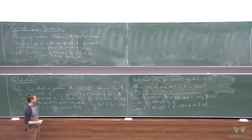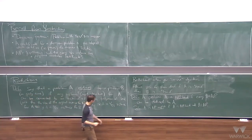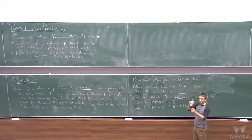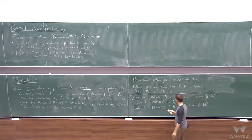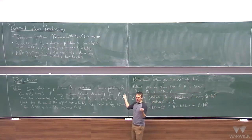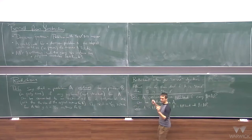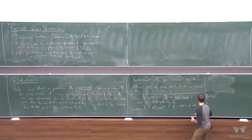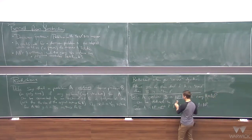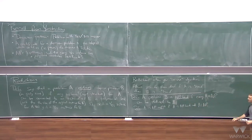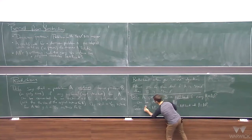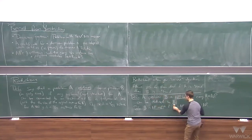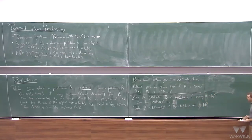I've kind of swapped the names A and B, but there's no real difference — I could write: problem B is NP-complete if every A in NP can be reduced to B, and B is also in NP. Sorry for the confusion.